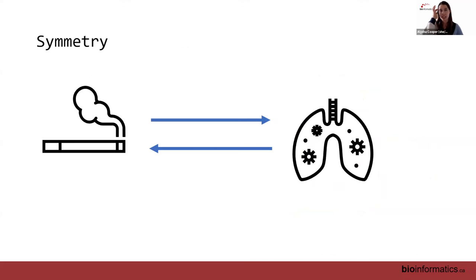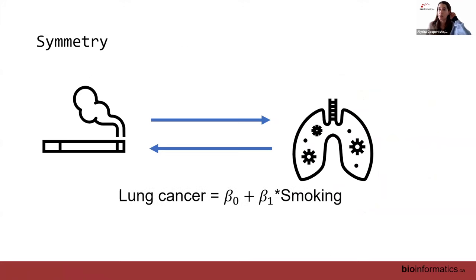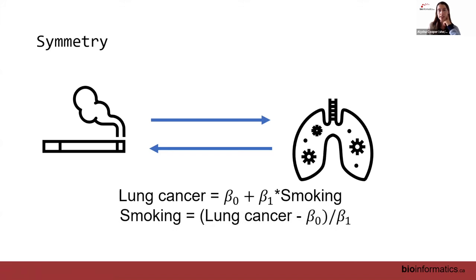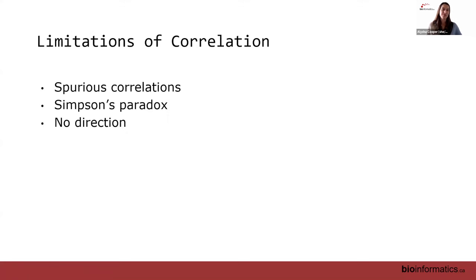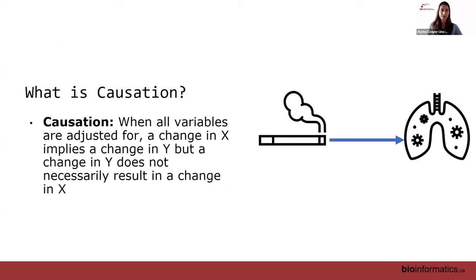With correlation there's also the symmetry problem: if I see an association, I don't know if it's X causing Y or Y causing X. Take the classic smoking-causes-lung-cancer example. With observational data, I could set up a linear model predicting lung cancer from smoking, or equally predict smoking given lung cancer — and we don't know which way the relationship goes. The key limitation of correlation is that we need to account for confounding variables to determine whether X truly causes Y.